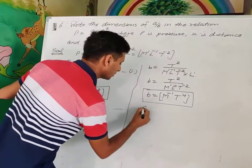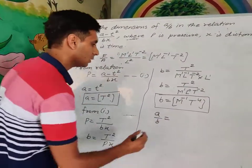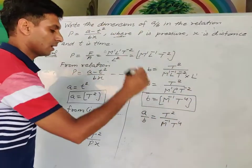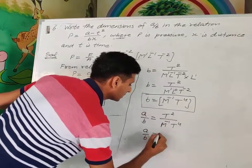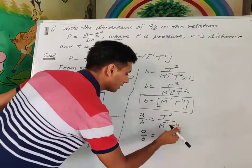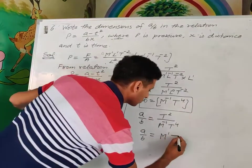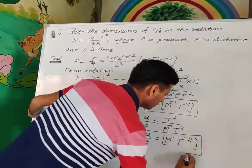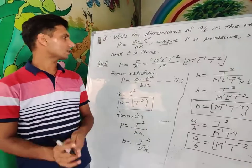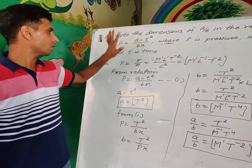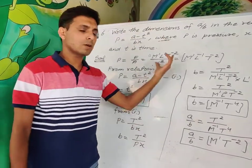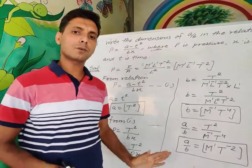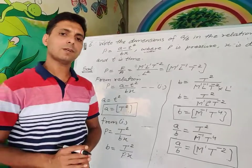Therefore a/b = T² / (M⁻¹T⁴) = M¹T⁻². So the dimensions of a/b are M¹T⁻². In this same way, you can create different questions by changing what the variables represent — e.g., p as power — and find the dimensions or ratio. Practice these in your fair notebook. Thank you, and see you next day.